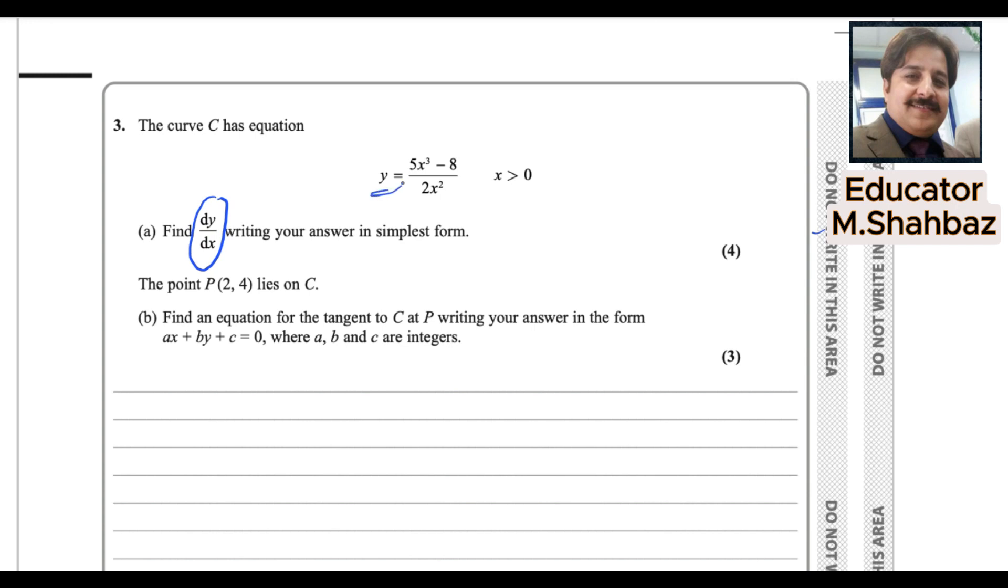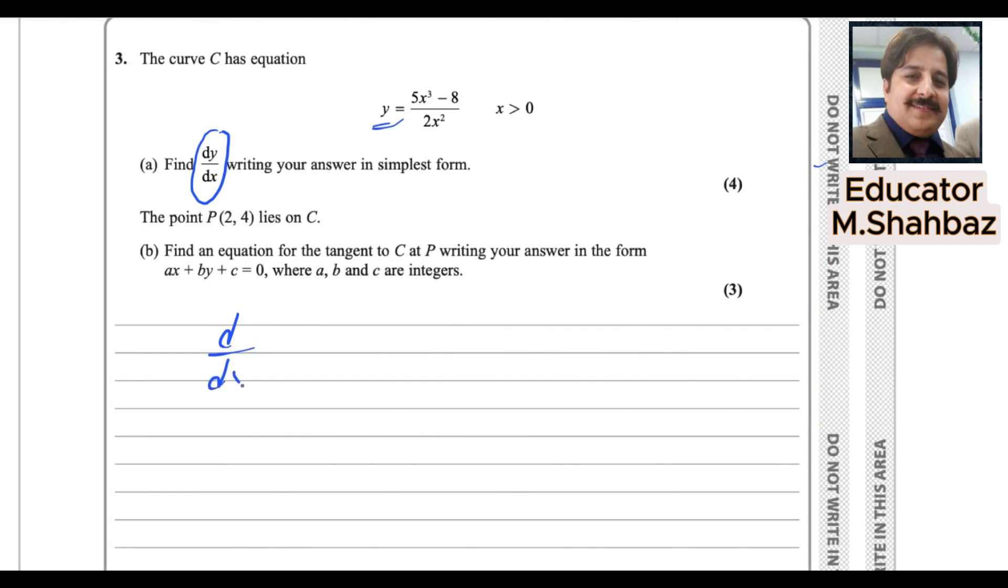So before starting this, let me tell you the formula. Introduce the formula for this differentiation. For if you have a function like this, x power n, so it will be n x power n minus 1. So this is the formula. We bring the power down and we reduce the power by 1. So this is the one formula you have to memorize.